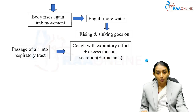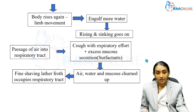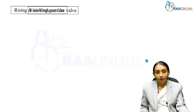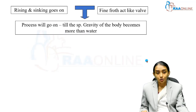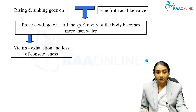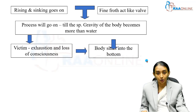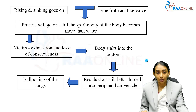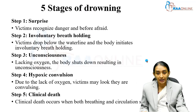The passage of air into the respiratory tract with coughing and expiratory effort causes irritation of the airways, resulting in excess mucus secretions — especially on the alveolar surfaces — which causes increased secretion of surfactants. Air, water, and mucus are churned up, producing a fine shaving-lather froth that occupies the respiratory tract. This acts like a valve, allowing air to go out only but not the water. This cycle continues, with the fine froth acting as a valve, until the specific gravity of the body becomes greater than that of the water. The victim becomes exhausted, loses consciousness, and the body sinks to the bottom. Finally, the residual air is forced into the peripheral air vesicles, resulting in the ballooning of the lungs. This vicious cycle is the mechanism behind drowning.